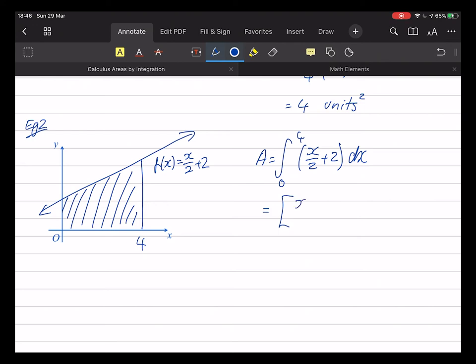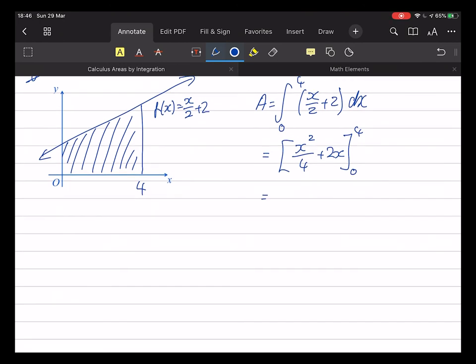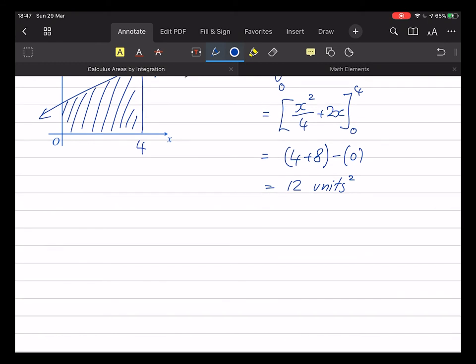So, the area in this case has got to be from 0 to 4 of x on 2 plus 2 dx. So, I take the primitive. I get x squared and 1 to the power and divide by it. That becomes on 4, plus 2x. I need to evaluate that at 0 and 4. 4 squared, 16 on 4 ends up being 4, and 2 times 4 is 8, minus the value at 0 which are all zeros. And 4 and 8 is 12, as it was before.